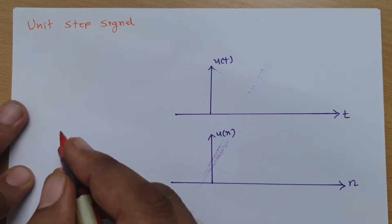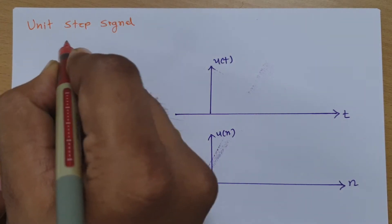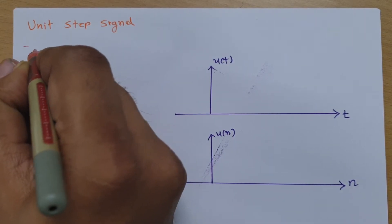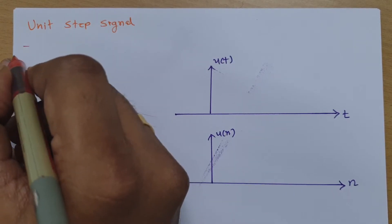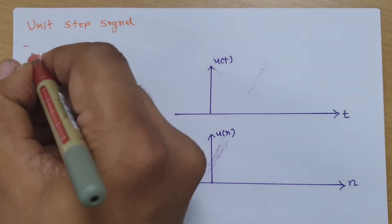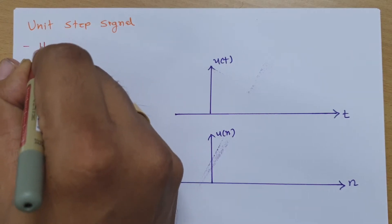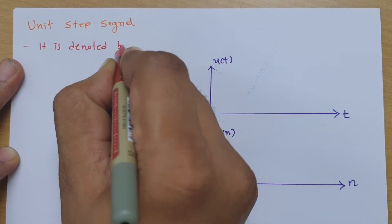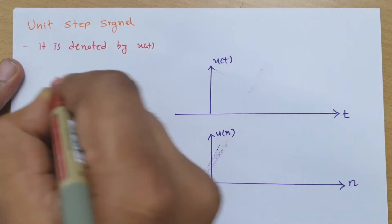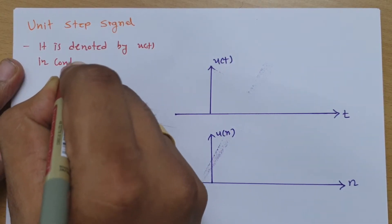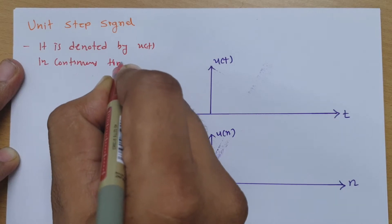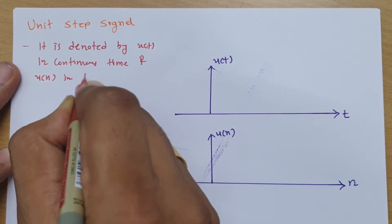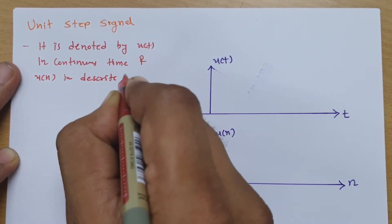Let us begin this session with how we can denote the unit step signal. It is denoted by u(t) in continuous time and by u(n) in discrete time.